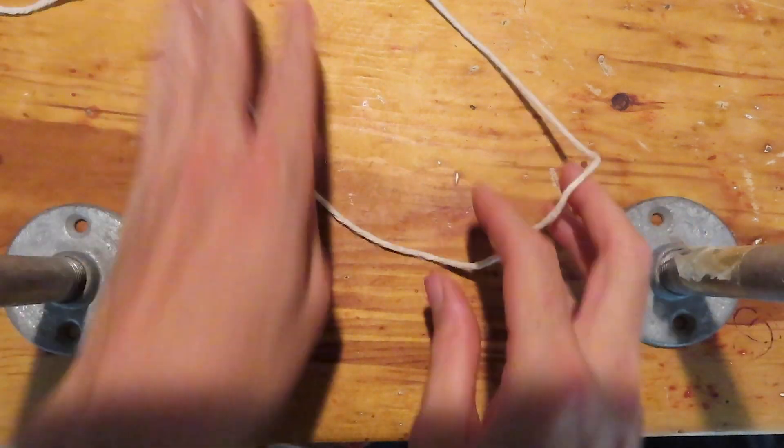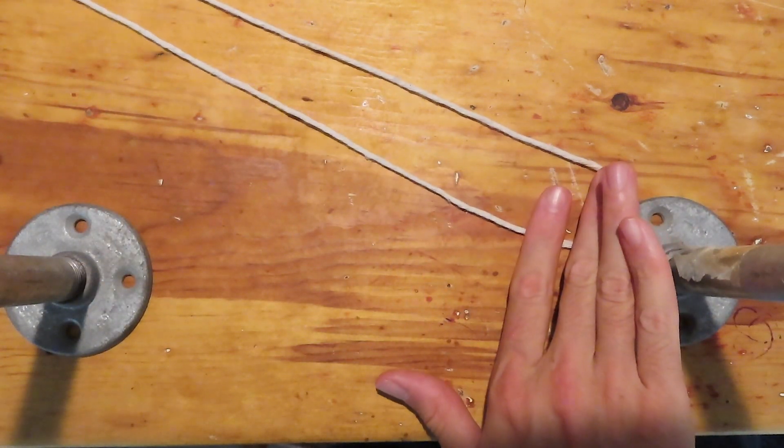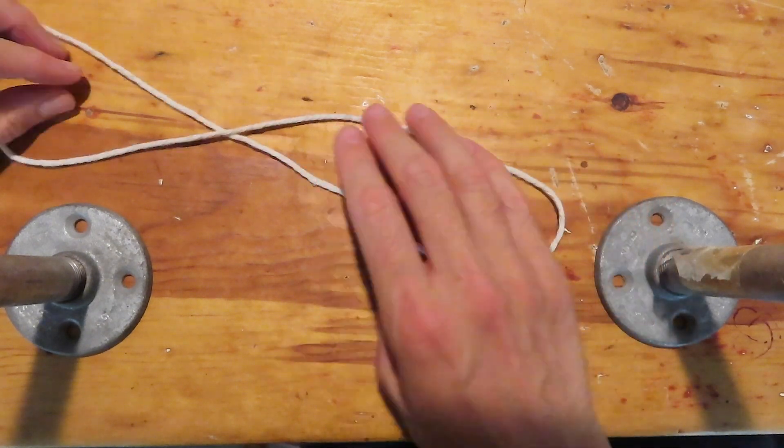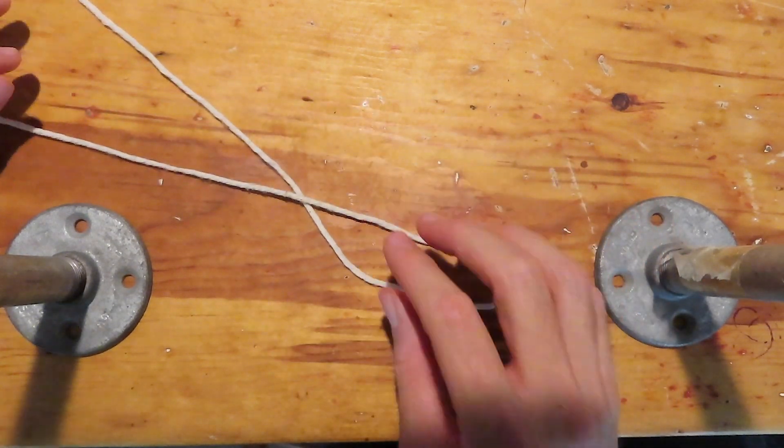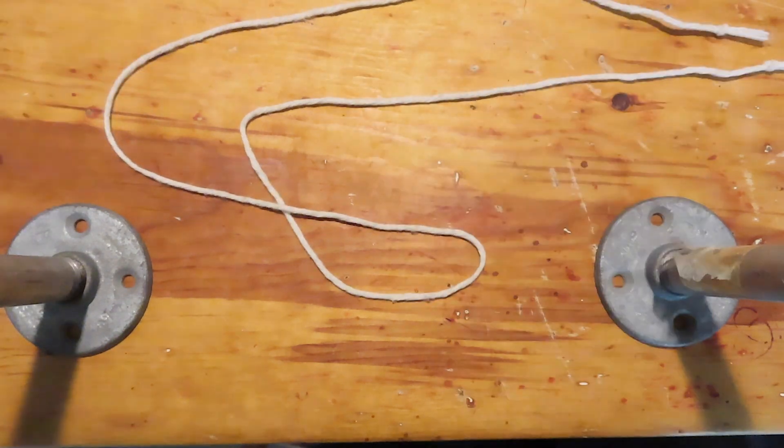Tying this knot is more of a braiding exercise than anything else, so we'll keep things loose. Start with a loop set up at an angle. Set up a crossing that brings the ends up and around the crossing.